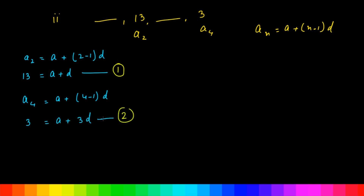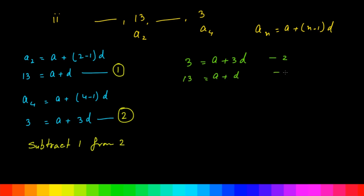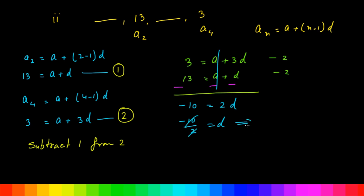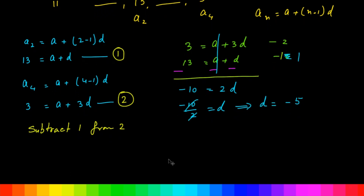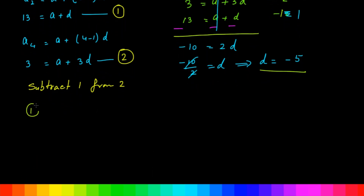Subtracting equation 1 from equation 2: (A + 3D) - (A + D) = 3 - 13. A cancels, leaving 2D = -10, so D = -5. Putting D back into the first equation: 13 = A + (-5), so 13 + 5 = A. Therefore A = 18.